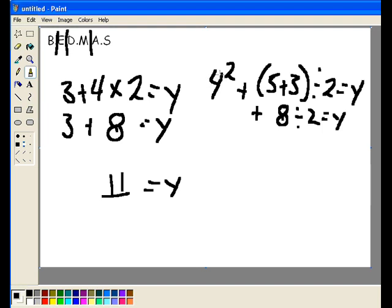4 squared, as you remember, is exponent, is 4 times itself twice, not 4 times 2. So 4 times 4 is 16, not 4 times 2, which is 8. So 4 squared is 16. So now I have solved for these two numbers, that number, and I've carried down everything I haven't touched yet.